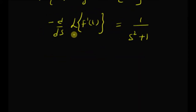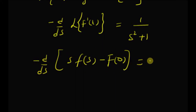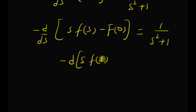Now by using the formula for the Laplace transform of a derivative, we have minus d by ds of s times F of s minus f of 0. That is, the Laplace transform of the time derivative of f of t is s times F of s, where F of s is the Laplace transform of f of t, minus the initial value of the function. The derivative with respect to s of this expression is equal to 1 by s squared plus 1.